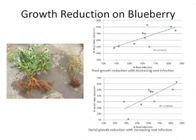On blueberry, it can be a pretty significant pathogen. On the left here we have a non-infected plant, on the right an infected plant — you can just see the growth difference. Here's data showing the relationship between growth reduction and root infection incidence. Root infection incidence is on the bottom, with root growth reduction and above-ground growth reduction shown above. It's pretty significant and substantial.